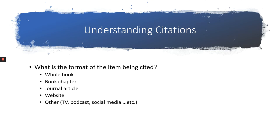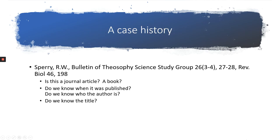Book chapters and journal articles get mixed up the most, and it's important to understand the rules so that when you go looking for the information you know where to begin. Recently a doctor approached me with a list of citations. He wanted full text to these citations. He didn't create the list so I don't blame him, but they were a bit difficult to decipher.